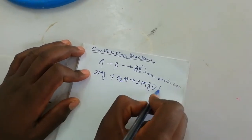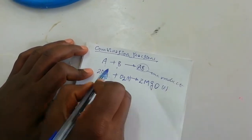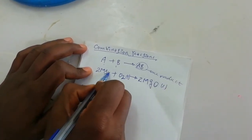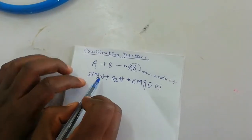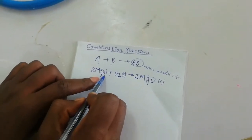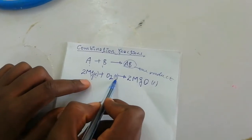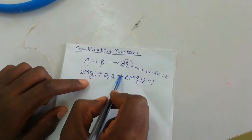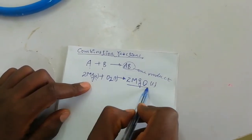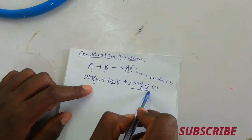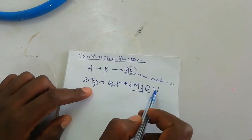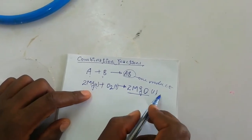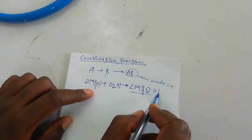Magnesium is a solid. Oxygen is a gas. We are going to get magnesium oxide, which is a white powder.